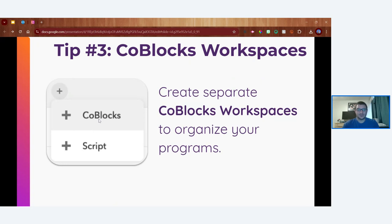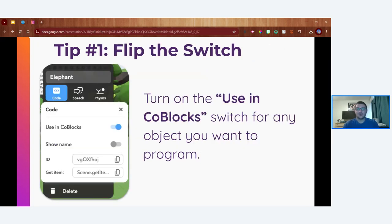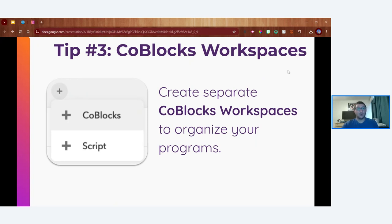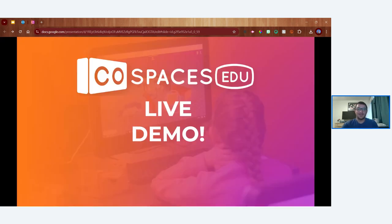To recap: tip one — flip the switch, always turn on the 'Use in CoBlocks' switch. Tip two — name your objects appropriately, either based on purpose or with numbers or letters. Tip three — separate your programs into distinct CoBlocks workspaces to stay organized. We'll practice all of these as we do some demos today — these are things I constantly reiterate with my students as they work in CoSpaces.